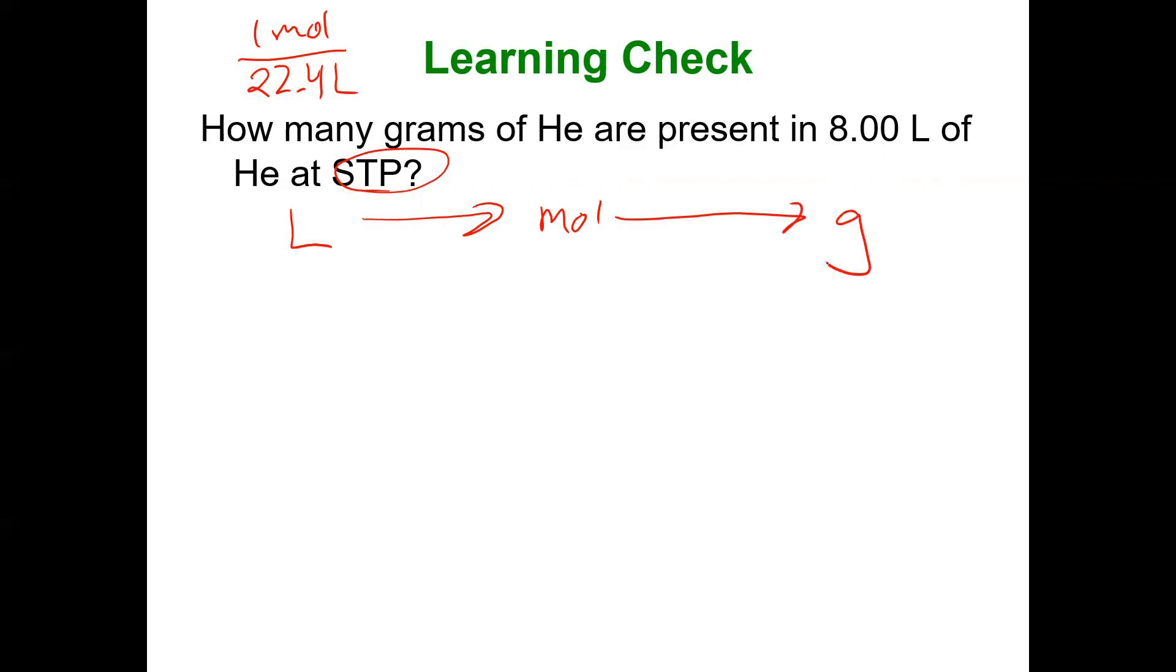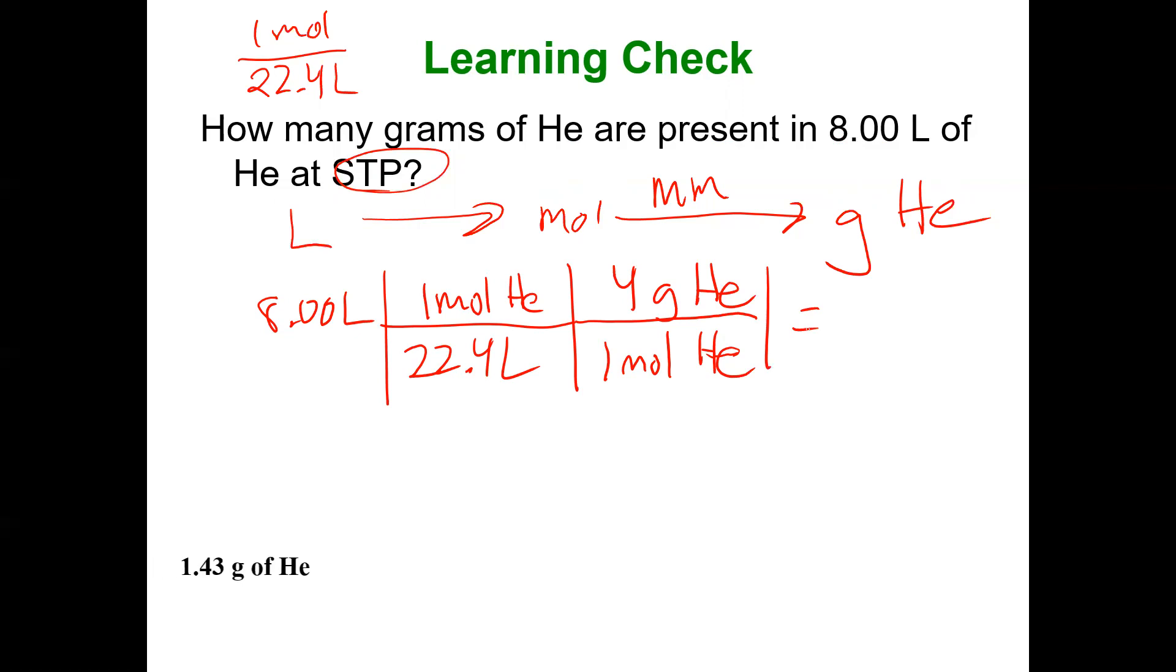I can easily go to grams of helium using the molar mass. So 8 liters of helium. There's 22.4 liters per one mole of helium. One mole of helium is roughly 4 grams of helium. And I get 1.43 grams of helium.